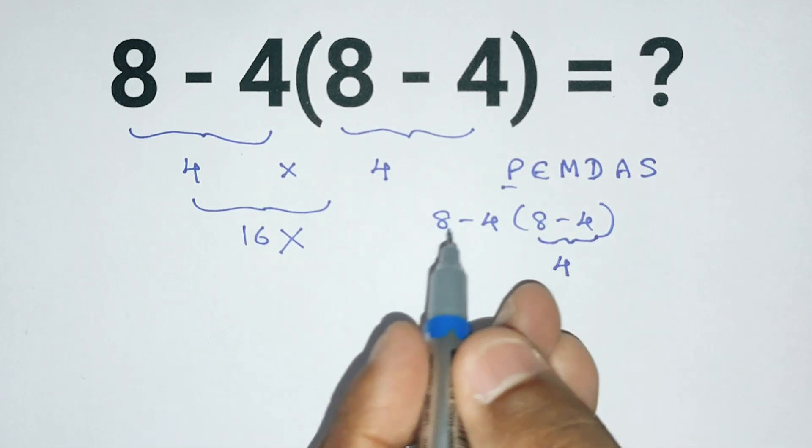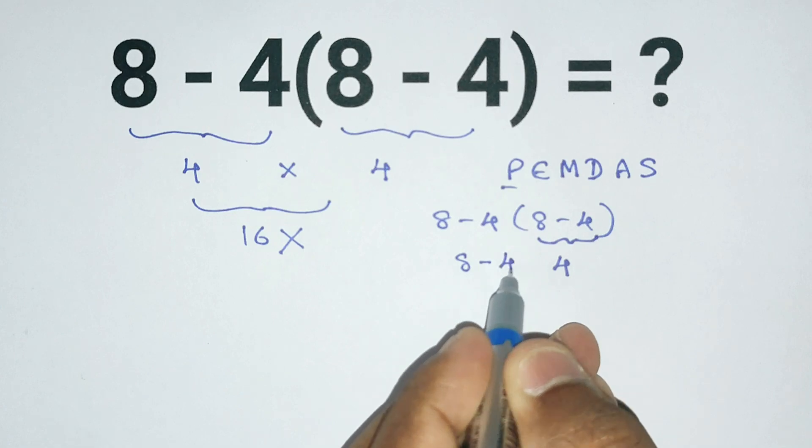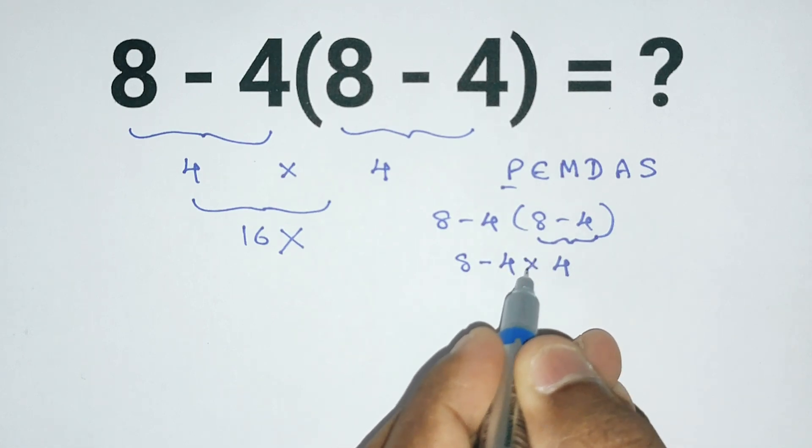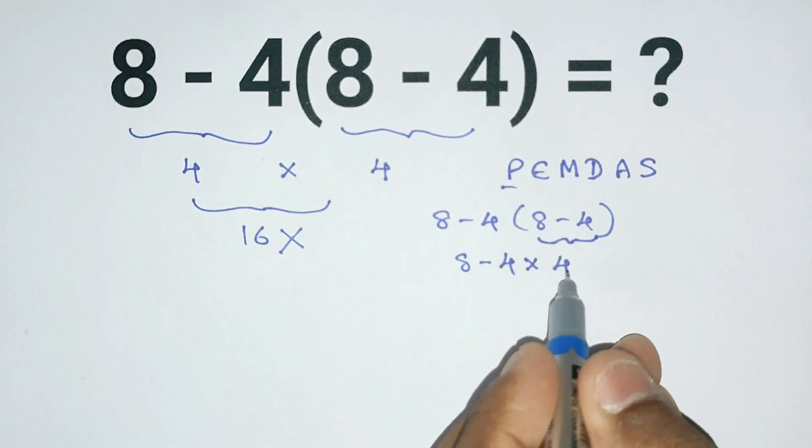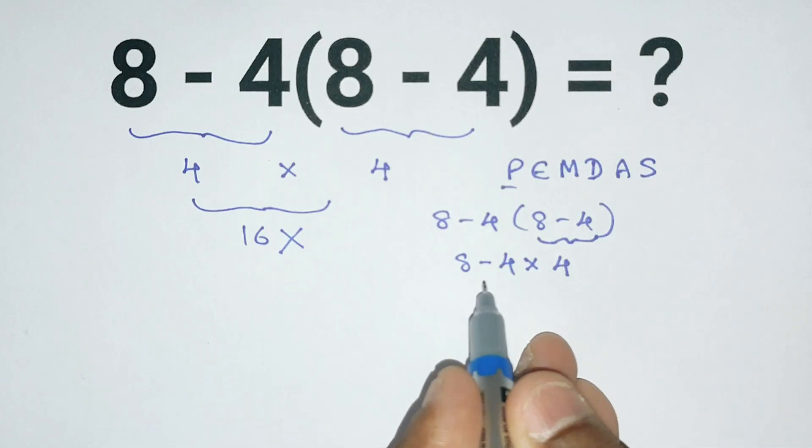Now the expression looks like this: 8 minus 4, and the parenthesis means multiplication, and 4. So 8 minus 4 times 4.